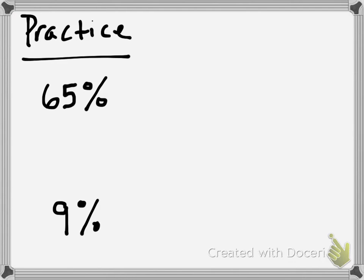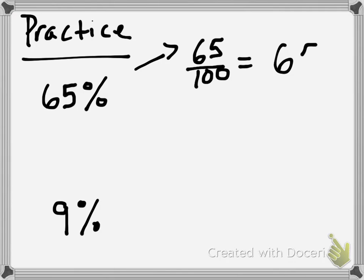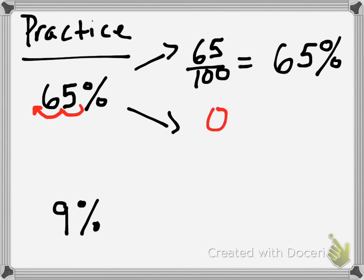Now going in the other direction: here I have sixty-five percent. Again, I'll do the two methods. I can write this as a fraction over one hundred: sixty-five over one hundred, and this is then equal to sixty-five hundredths. Then the decimal point method: I can move my decimal point two spots to the left, and after moving two spots to the left I would have sixty-five hundredths (0.65).